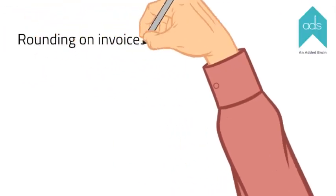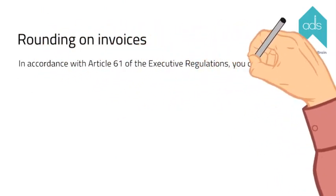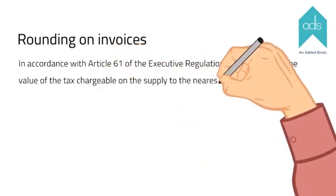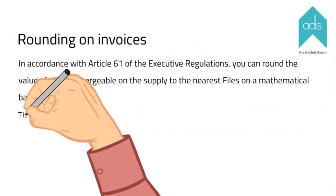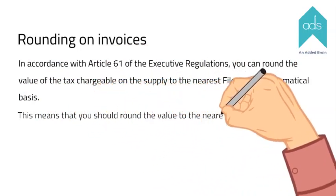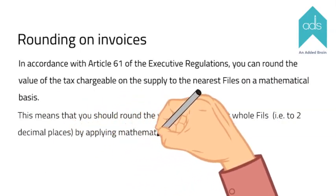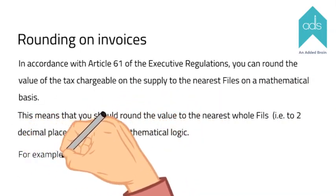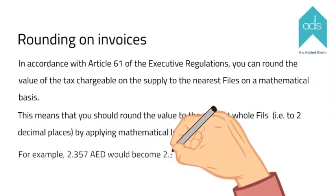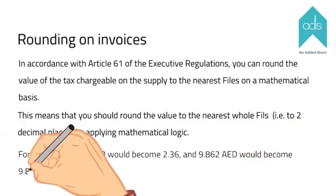Rounding on invoices: In accordance with Article 61 of the Executive Regulations, you can round the value of the tax chargeable on the supply to the nearest fils on a mathematical basis. This means that you should round the value to the nearest whole fils by applying mathematical logic. For example, 2.357 AED would become 2.36, and 9.862 AED would become 9.86.